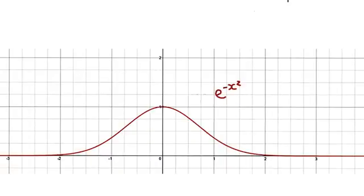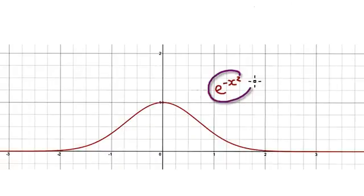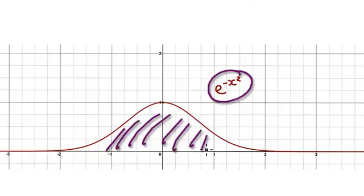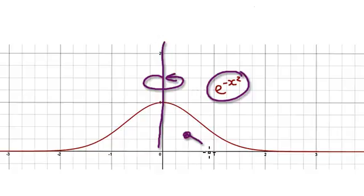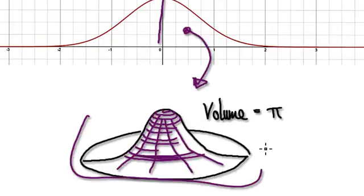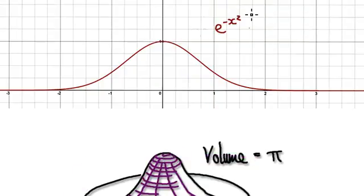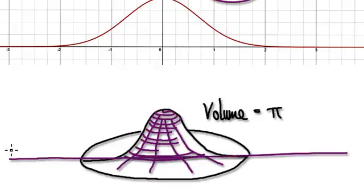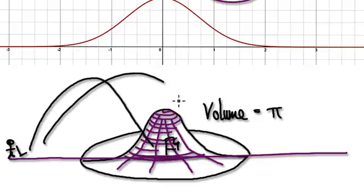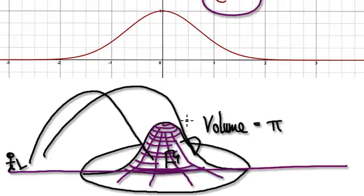Following on from some of our earlier videos, we are still trying to find out the area underneath this graph. We've seen in the past that if you rotate this 360° along the y-axis, you would get a 3D solid looking something like this. We would use this to model our game of golf — the flag would be here — so whenever you're aiming at a certain target, this turns out to be a good model.